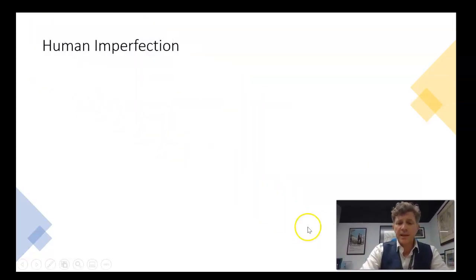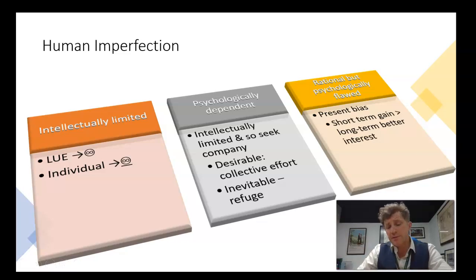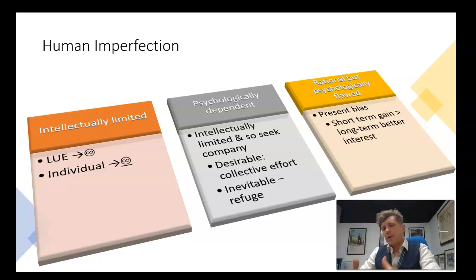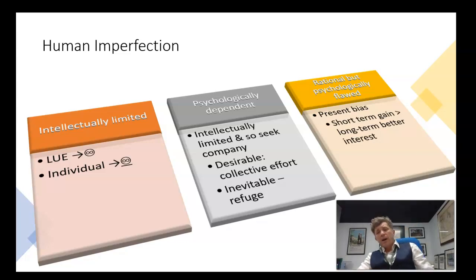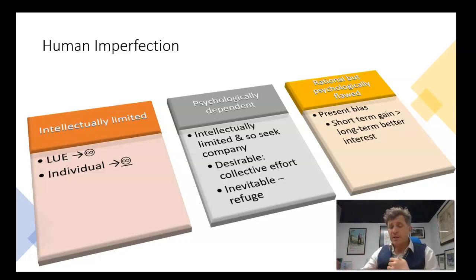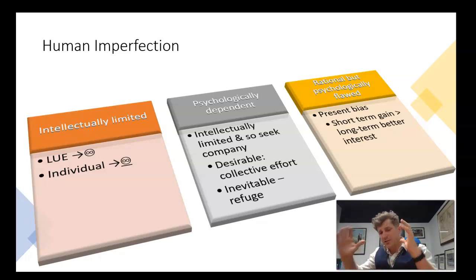Human imperfection needs to be seen in three specific areas, as we discussed in our introduction to conservatism: intellectual limitations, psychological dependence, and psychological flaws. I'm really trying to resist arguing that conservatives think that humanity is bad, because I genuinely don't think they do. I think we try to be good, but we keep getting it wrong because we have this present bias. We know what our long-term better interests are, but because we're fallible, we keep taking shortcuts. We keep seeking to subvert society for our own selfish gain, even though we know that our long-term better interests are inextricably tied up with that organic society.